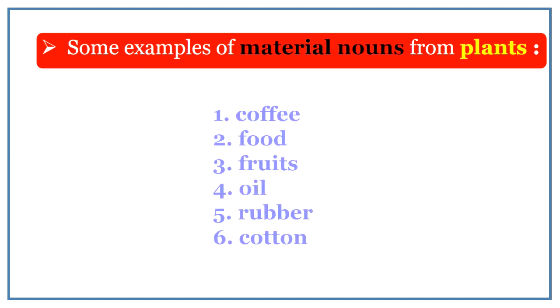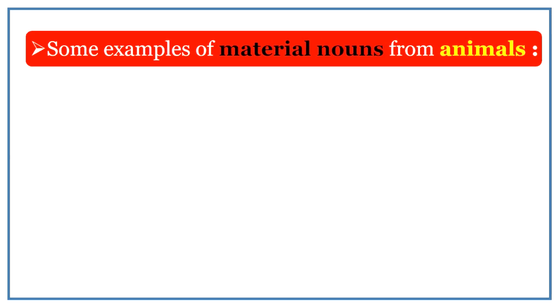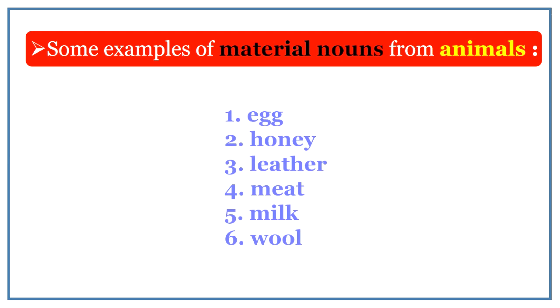Here are some examples of material nouns from plants, like coffee, food, fruits, oil, rubber and cotton.